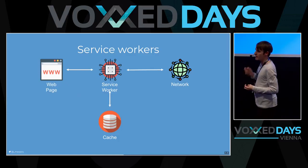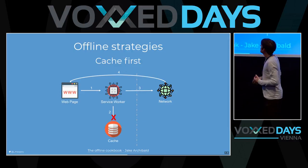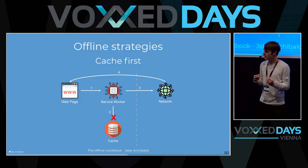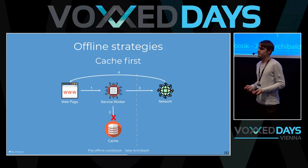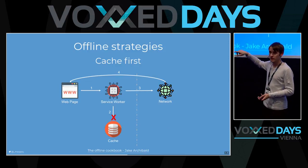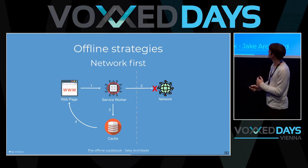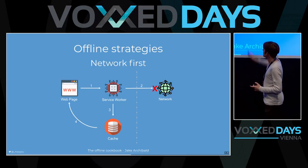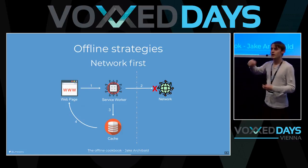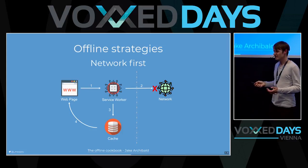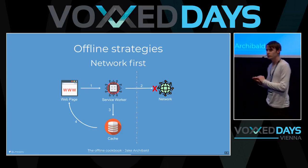Jake Archibald wrote something called the Offline Cookbook. In it, he gives us some patterns for an offline strategy. The first is cache-first: you want to load a page, first check the cache, and if there's nothing in the cache, fall back to the network. There's another one — the opposite: network-first, otherwise fall back to the cache. For instance, if I'm a shop and want to show products I can use that, but for really sensitive data like price or availability, maybe I want to do network-only — no cache at all.